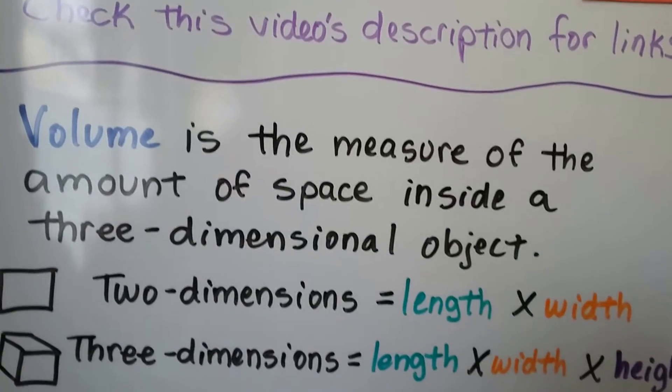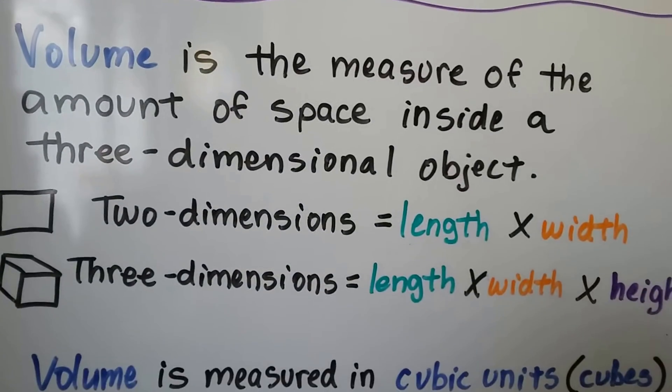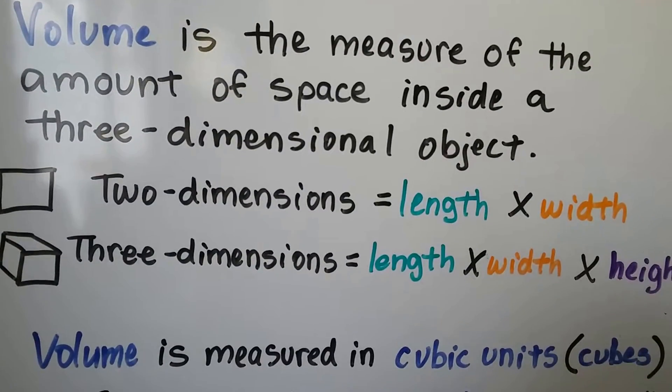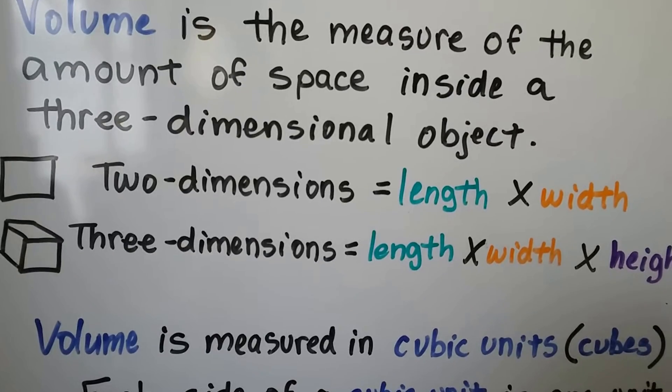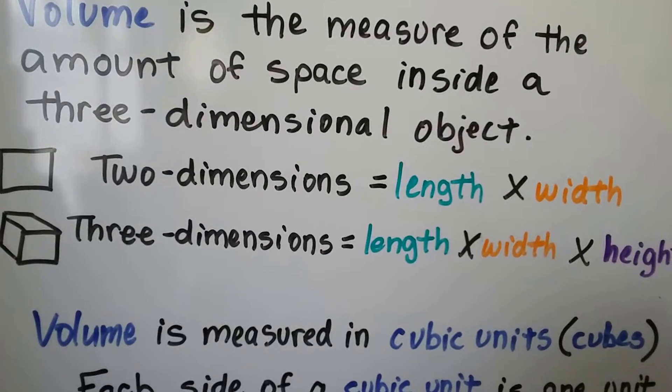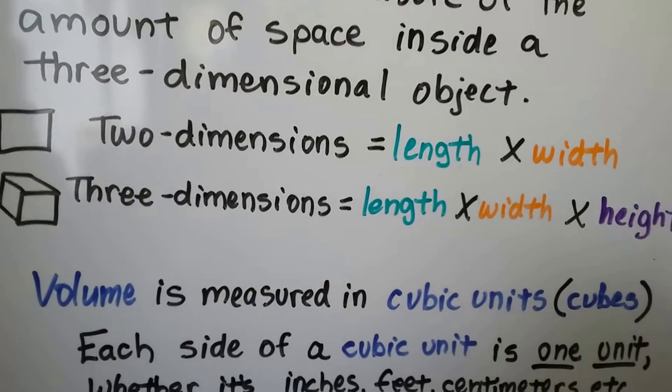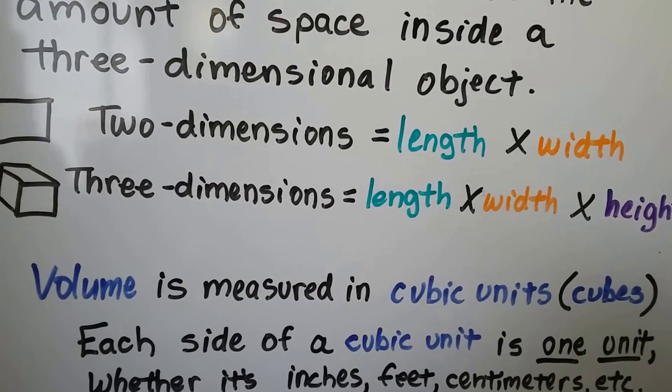Volume is the measure of the amount of space inside a three-dimensional object. That's 3D. Two-dimensional or 2D is just length times width. Three dimensions is length times width times height.